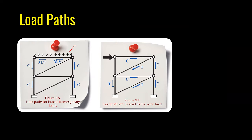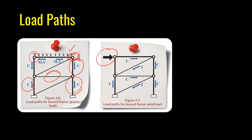When a vertical distributed load is applied to a frame with pin connections, the pins will not transfer any moment from the beam to the column — only vertical load is transferred, resulting in compression. One member may carry no loading at all. When a horizontal load is applied, it causes compression in one member and tension in another, with compression and tension distributed through the columns. Bracing connecting the two elements acts as a tensile member.